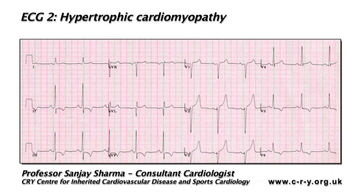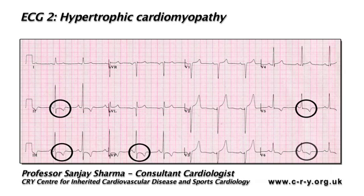First, there is ST segment depression in leads 2, 3, AVF, V5, and V6. Second, there are T wave inversions in leads 2, 3, AVF, V5, and V6. Third, there is a pathological Q wave in AVL.